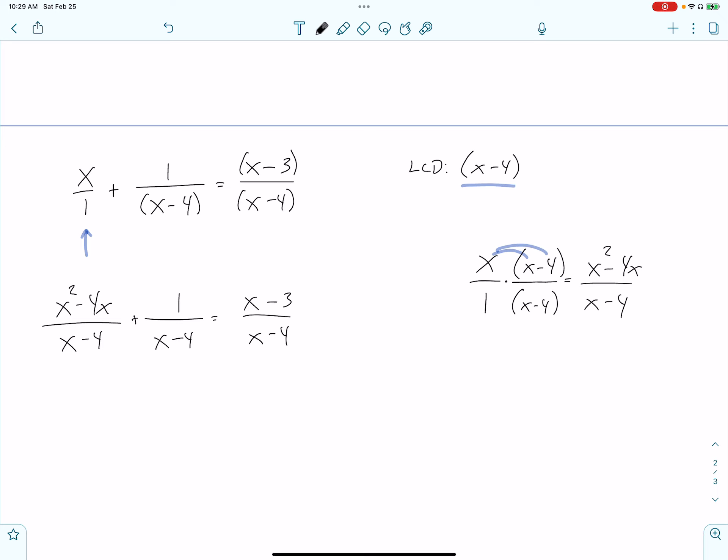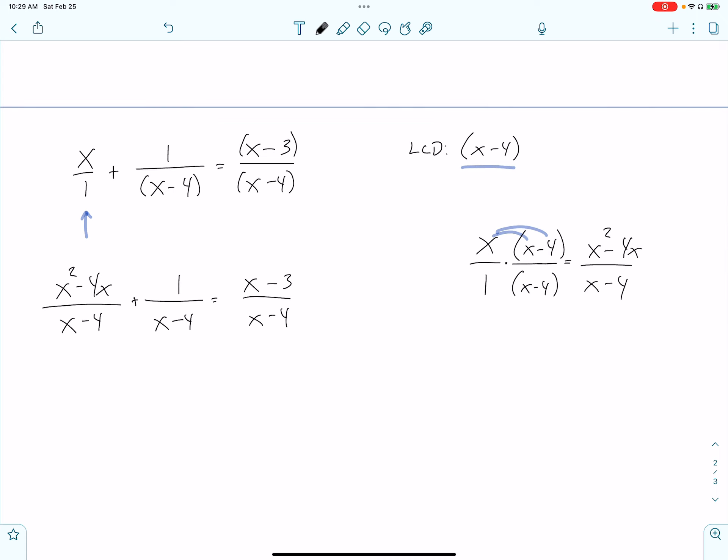Previously, X over 1 is now X squared minus 4X over X minus 4, and it was equal to X minus 3 over X minus 4. We're right in the halfway point, and now all the pieces have the same denominator. I'm going to take that one extra step where these two combine because their denominators are the same. Let's just merge them so we have fewer moving parts. They become X squared minus 4X plus 1 over X minus 4.